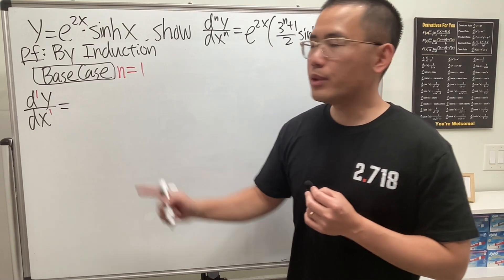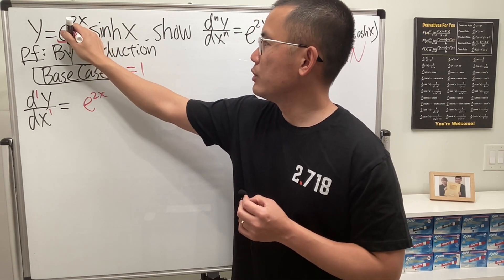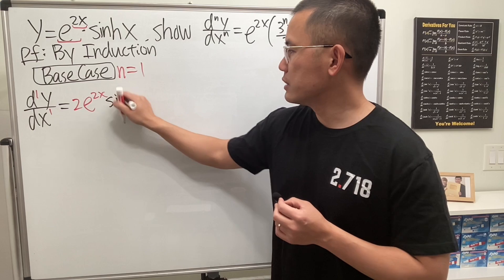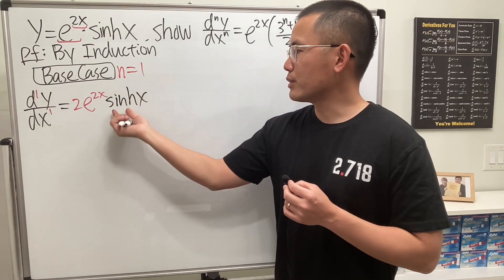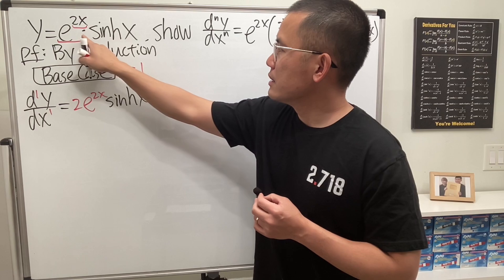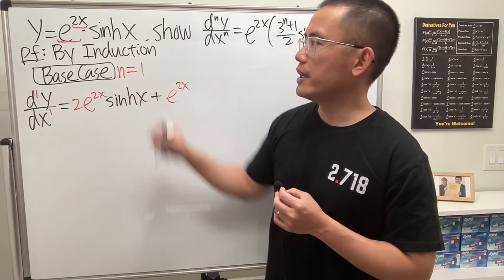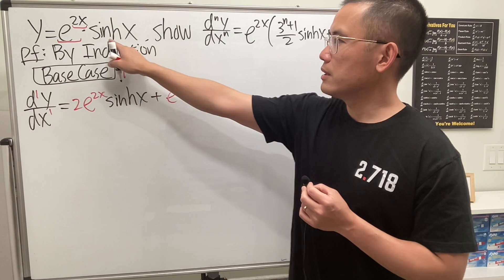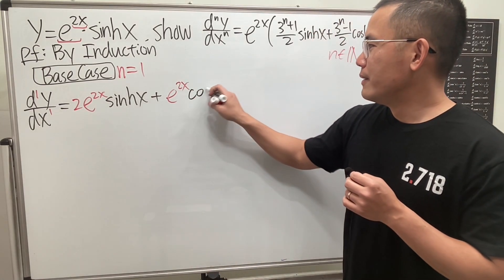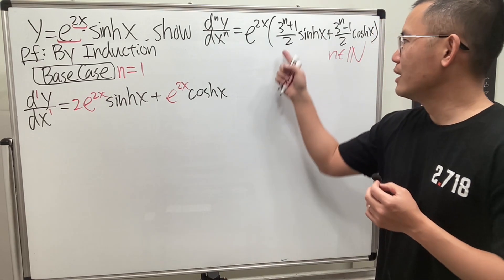We apply the product rule. First, we differentiate the first function e to the 2x using the chain rule — the derivative of 2x is 2 — and keep the second function, which is sinh of x. Then we keep the first function e to the 2x and differentiate the second function: the derivative of sinh is cosh. We do this without converting sinh and cosh to exponential form because that's how the formula is written.